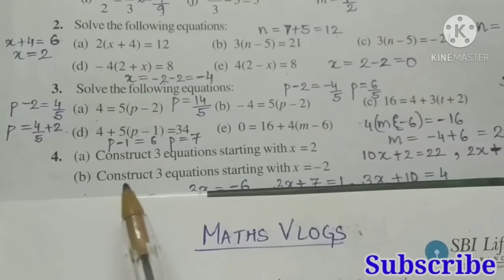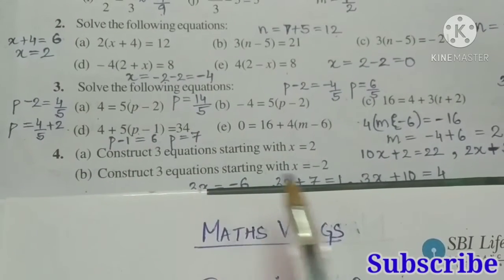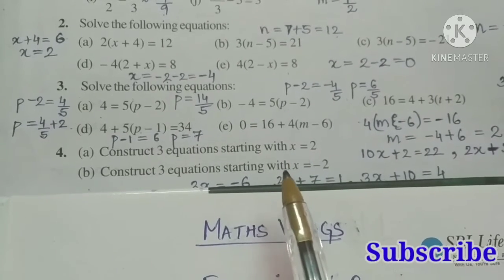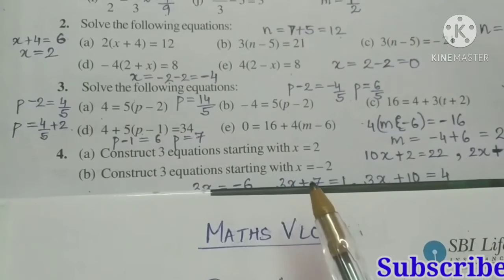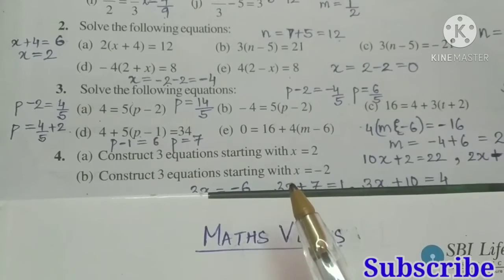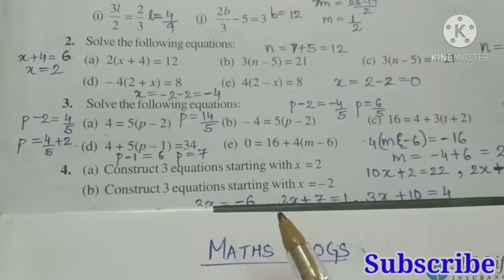Second part also: construct three equations starting with x equal to minus 2. So like part A, you can multiply, add, or divide anything you can do and form three equations. So try to solve it. If you have any doubt, then you can ask in the comment box.